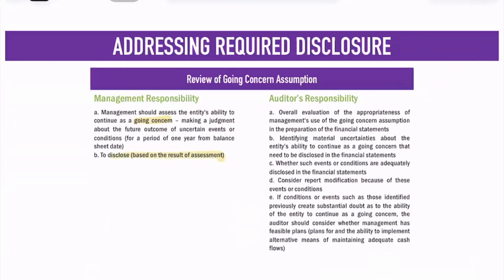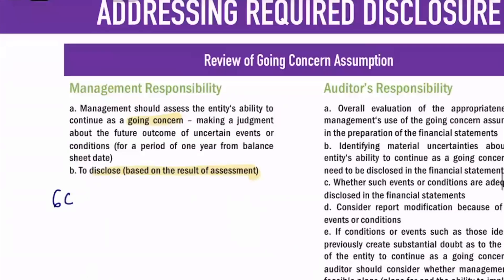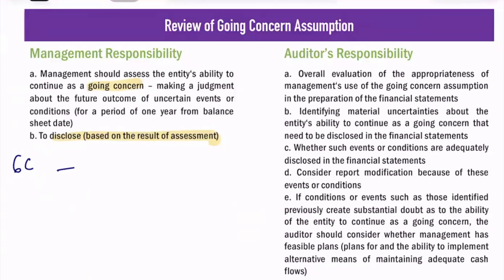What will the entity disclose? The entity will first assess going concern. Upon assessment, you test whether to disclose that they are really in going concern or now at a liquidation concern. Because if they are quitting the business, they should present their financial statements at liquidation concern. But generally, in the absence of any information, going concern is assumed. The recording of assets and liabilities will be based on PFRS since it is going concern. But if it is already a liquidating concern, you will not present it that way.